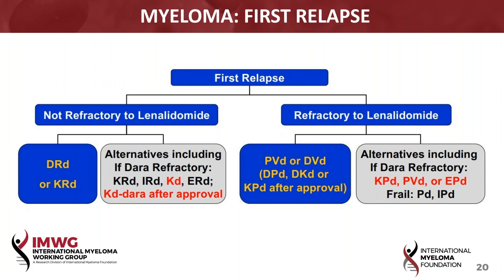I'm glad you emphasized the point about the DARA-refractory setting because I see some questions coming up related to that. Maybe you could comment on the value of the ELO-POM-DEX combination — I was quite surprised to see that this was quite beneficial in this setting. It's fascinating. This is the Eloquent 3 trial, which combined elotuzumab with pomalidomide and dexamethasone and showed a striking difference in favor of the three drugs over the pomalidomide-DEX platform. So after DARA runs out of benefit for a patient, there may be a role for ELO-based platforms.